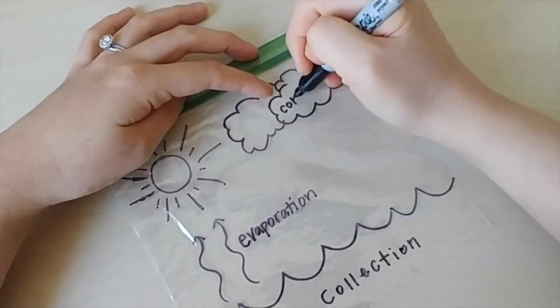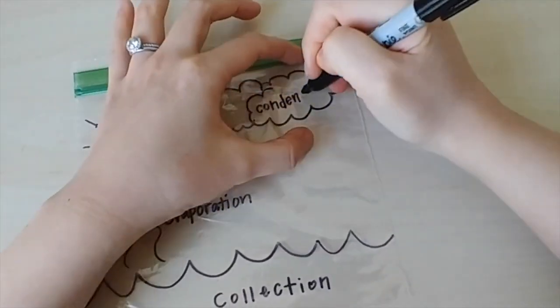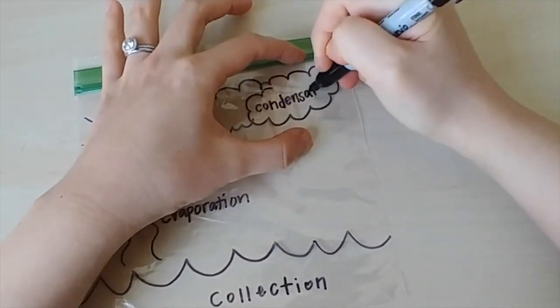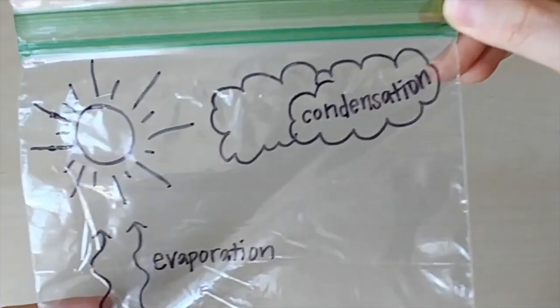When water droplets condense they form clouds as they return back to liquid form. Condensation is spelled C-O-N-D-E-N-S-A-T-I-O-N.